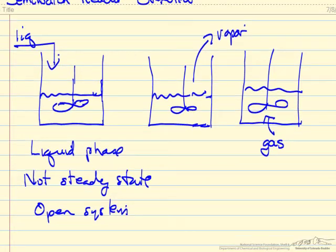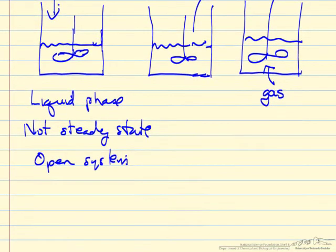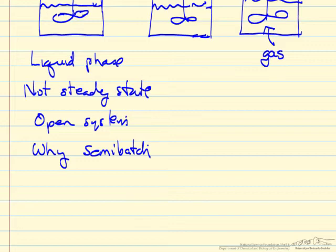And the question would be why would we do this? What's the advantage? Why a semi-batch reactor? So there are a number of cases that justify using this type reactor.